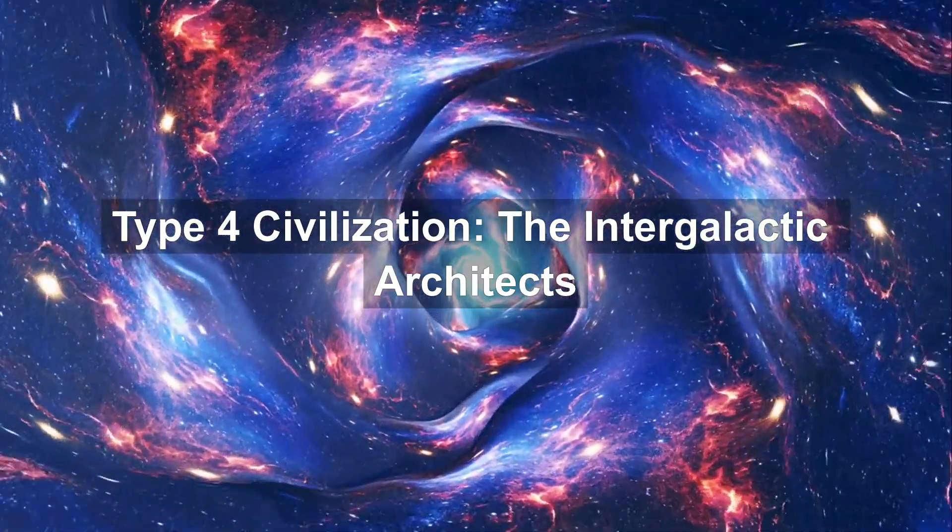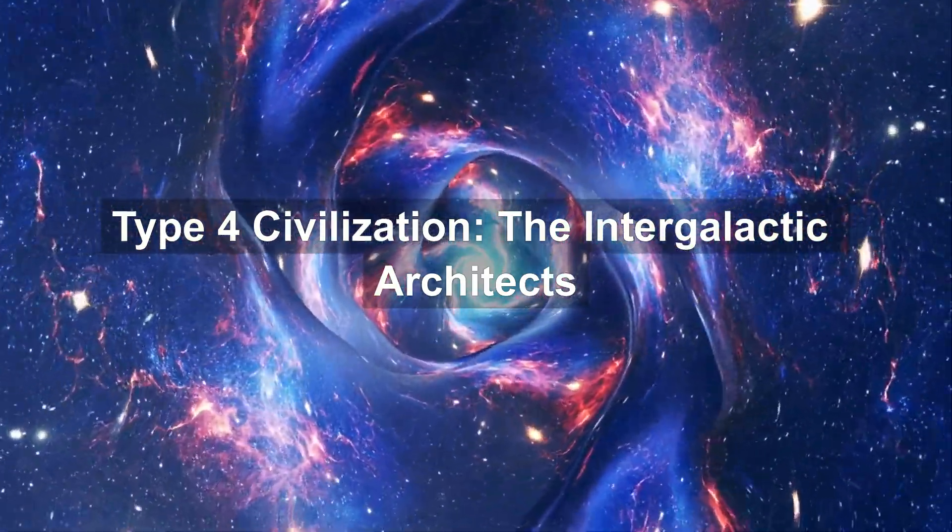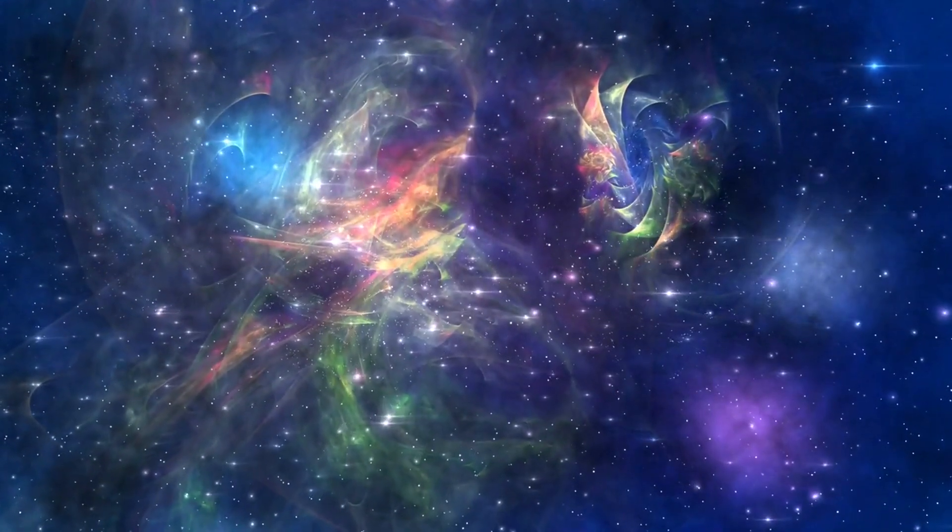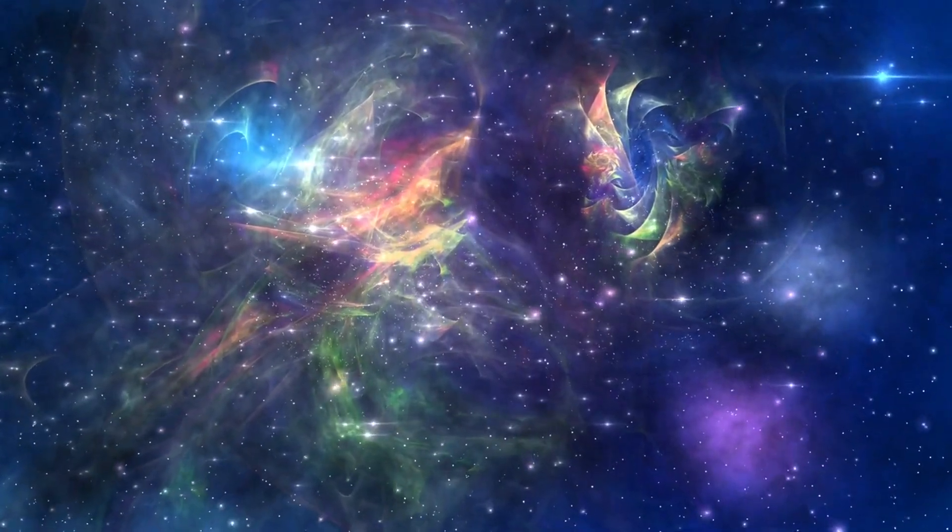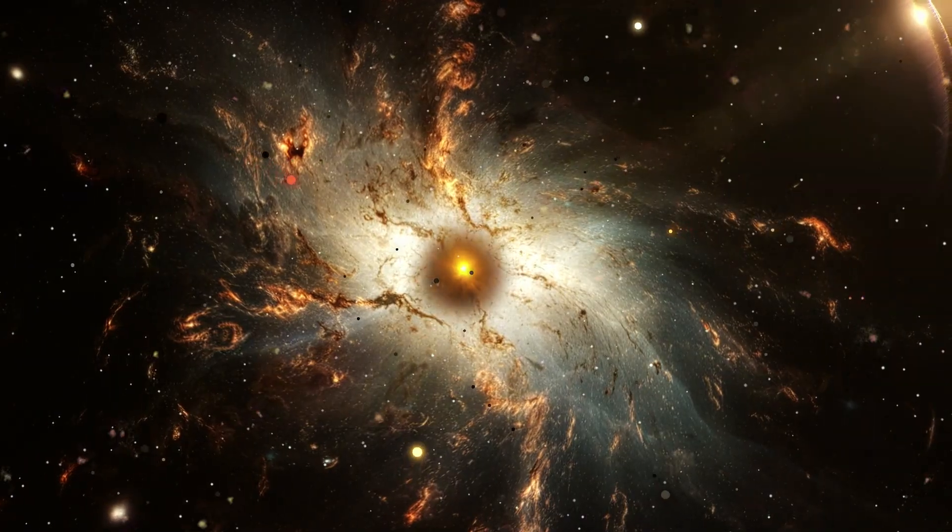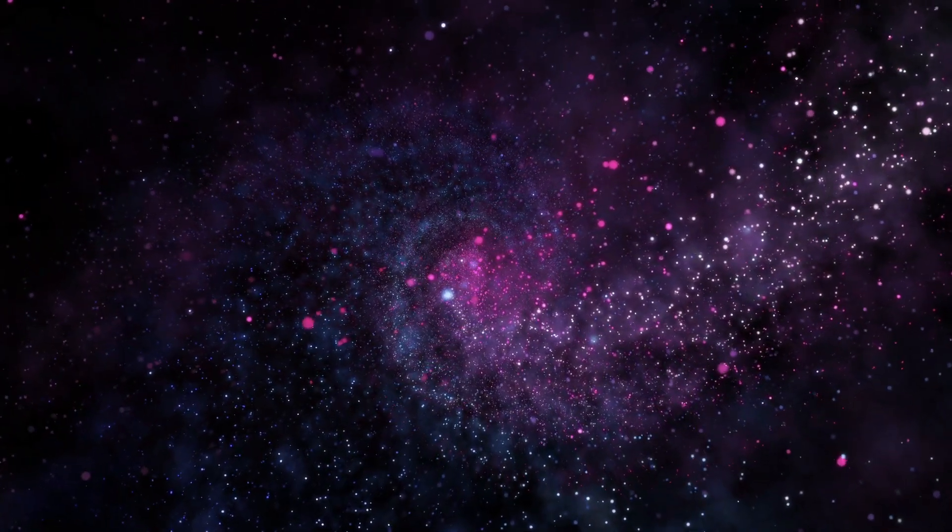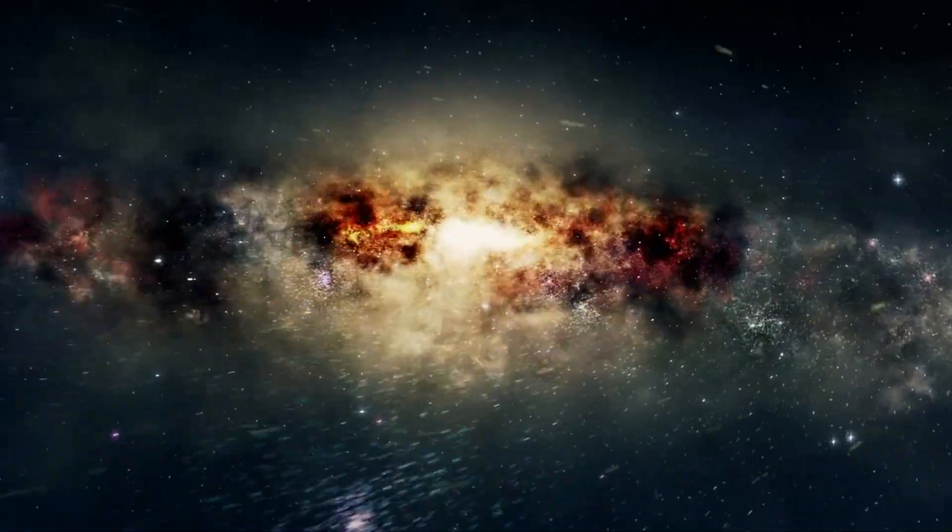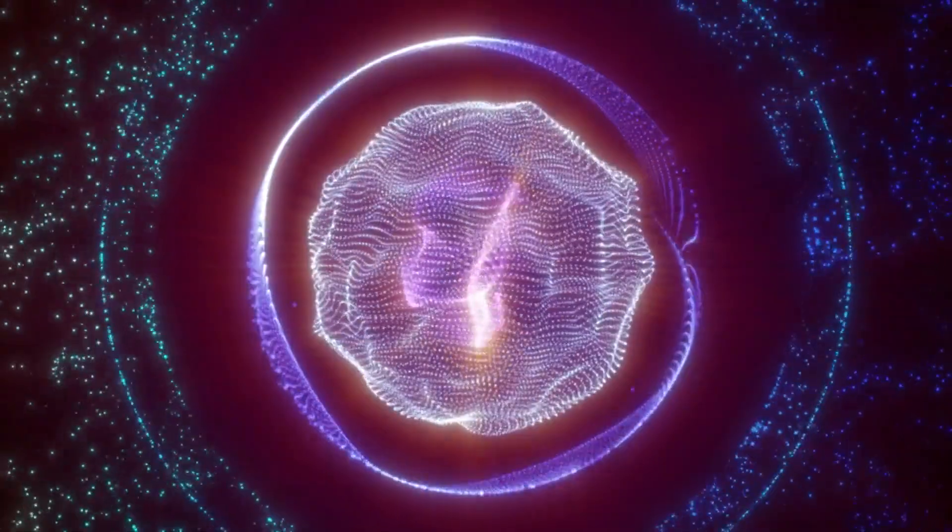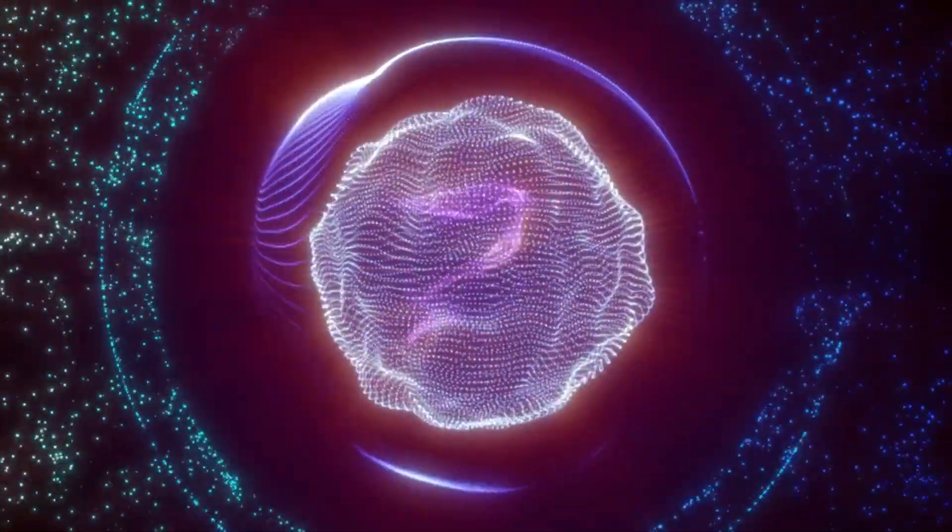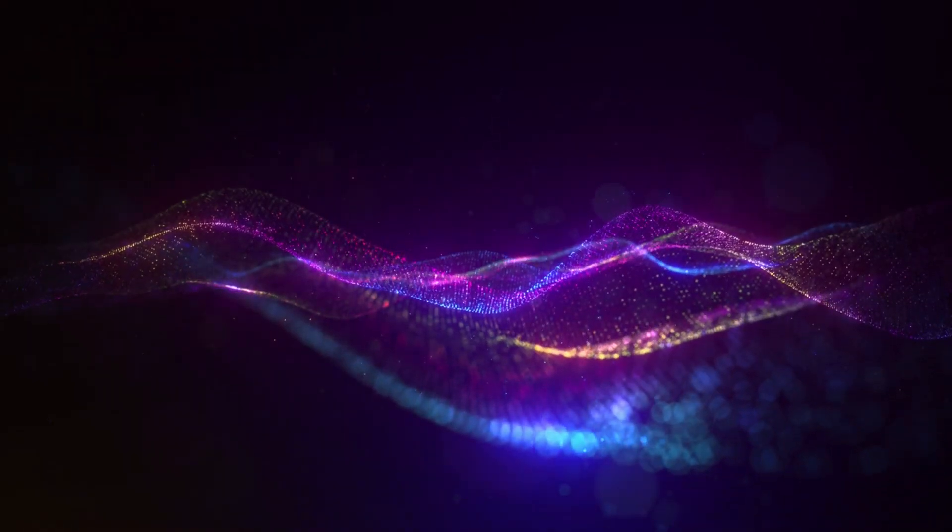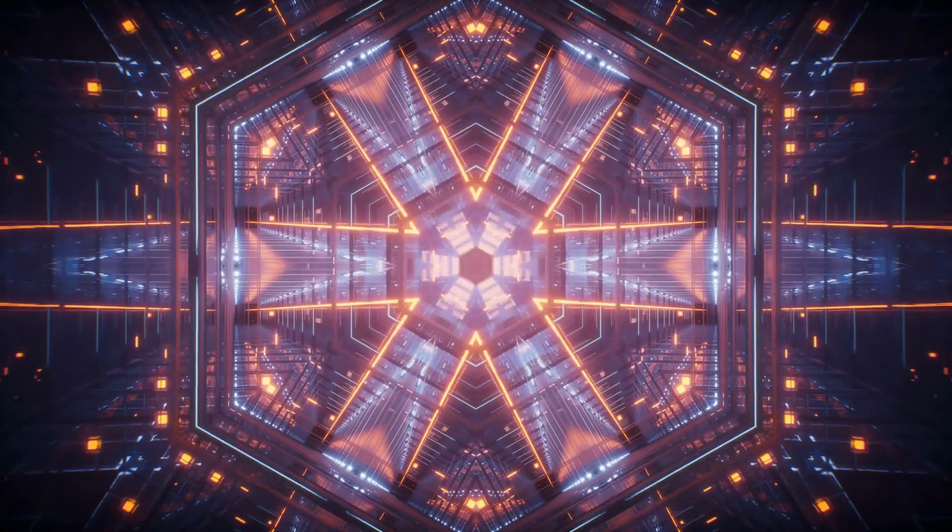Type 4 civilization: the intergalactic architects. Forget galaxies. A Type 4 civilization spans the entire universe. They control energy on the scale of billions of galaxies. They understand the structure of space-time and manipulate dark matter and dark energy, the mysterious forces that make up most of the universe. They could travel across cosmic filaments, seed life on multiple planets, and even reverse entropy.